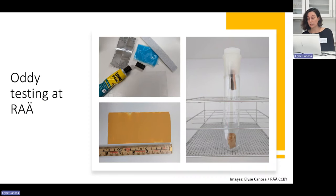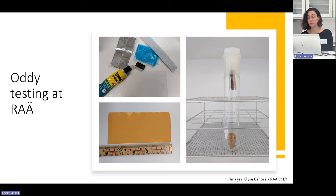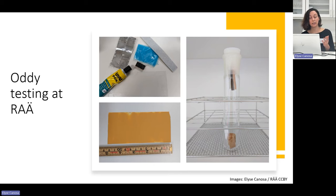At our institution, the Swedish National Heritage Board, we use the three-in-one method currently proposed by the British Museum. This means we use a long and thin glass boiling tube, around 50 milliliters in volume. We use two grams of material and a small vial filled with approximately 0.5 milliliters of water, plugged with a piece of cotton. The tube is then plugged with a silicone stopper, into which we cut with a scalpel and insert the silver, copper, and lead coupons vertically.